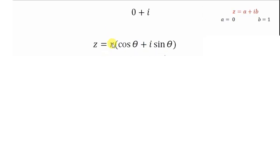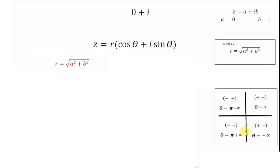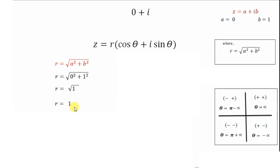Now we can easily find the modulus r and argument theta. To find r, the formula is r = √(a² + b²). Here a = 0 and b = 1, so r = √(0² + 1²) = √1 = 1. So the modulus r equals 1.